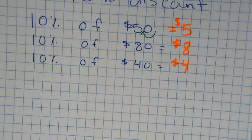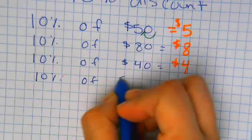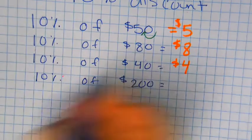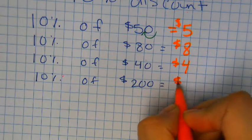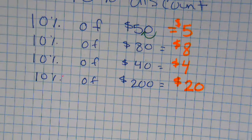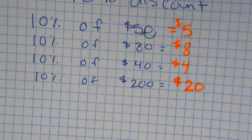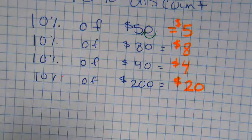But wait — what if it's 10% of 200? One zero — 20. Do you guys see the 10% pattern? If a question is asking what's 10% of something, all you have to do is just get rid of that last zero. But what if there's no zeros?